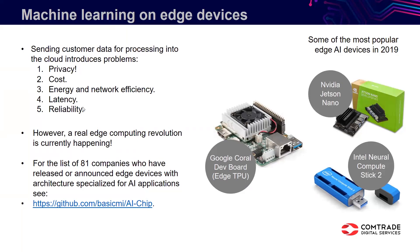It's quite fortunate that on the technology side we have reached a point where an edge computing revolution is currently happening. Here I included three devices especially meant for prototyping that were the most popular edge devices last year, not counting mobile phones — many of which also now have specialized chips for AI. To see what to expect from this area, there's an interesting link where someone has listed all companies who have announced products related to edge computing specialized for AI. Currently there are 81 different providers, so we will see quite a flood of different products.